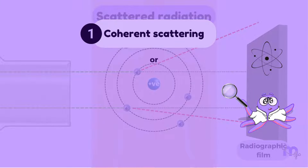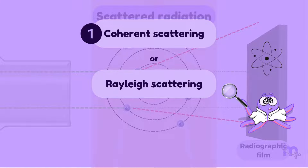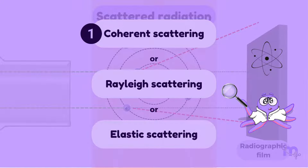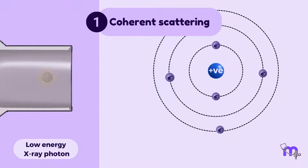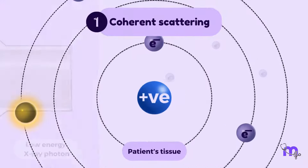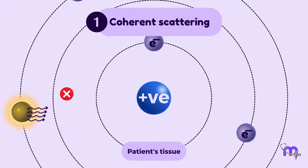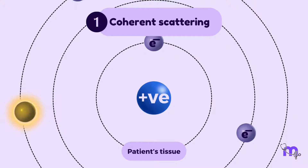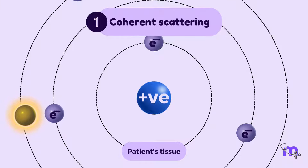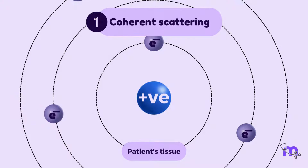Coherent scattering is also called Rayleigh or elastic scattering. A low-energy incident photon coming from the X-ray machine interacts with the outer shell electron of an atom in the patient. It does not possess enough energy to eject out the electron and create an ion. Therefore, the electron oscillates or vibrates in its position at a frequency equal to that of the incident photon, which then ceases to exist.